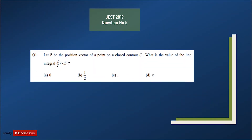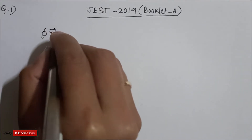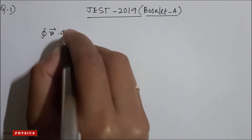We start with 2019 booklet series A. Question 1: let R be the position vector of a point on a closed contour C. What is the value of the line integral — closed integration of R dot dR? Four options are given, so consider closed integration of R dot dR.